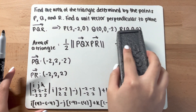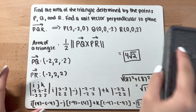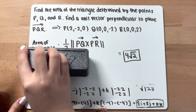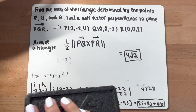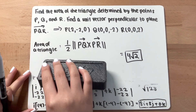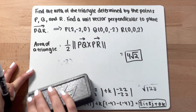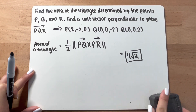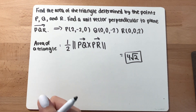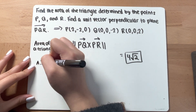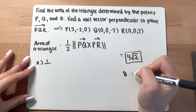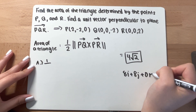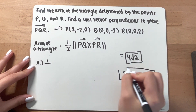Now set that aside and find the unit vector perpendicular to the plane. A unit vector perpendicular to the plane will either go in the same direction as the cross product or the opposite direction. The cross product is 8i + 8j + 0k — remember this vector.